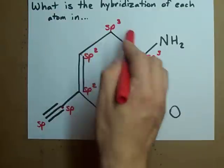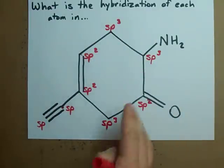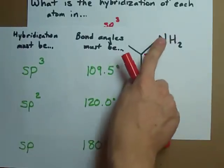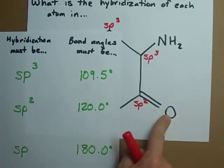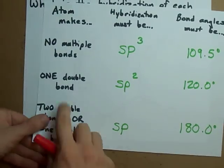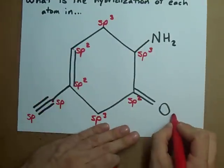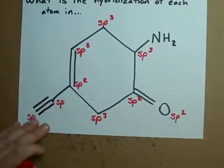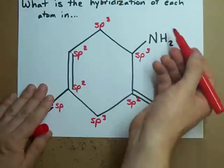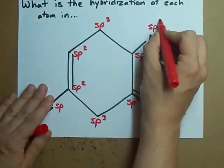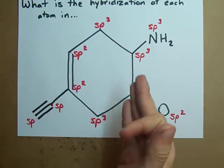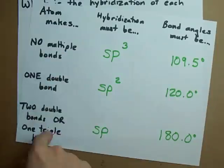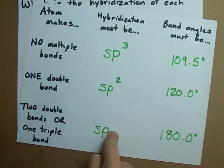You'll notice I've only labeled the carbons — carbon is the most common atom you'll deal with in hybridization — but you can also apply this to nitrogen and oxygen. This oxygen has one double bond attached to it, so if you're asked, it's sp2 hybridized. Same rules as for carbon. And this nitrogen has no double bonds, so it's sp3 hybridized. Easy rules once you know them: count the number of double bonds and triple bonds, look it up in the chart, and see what the hybridization is.